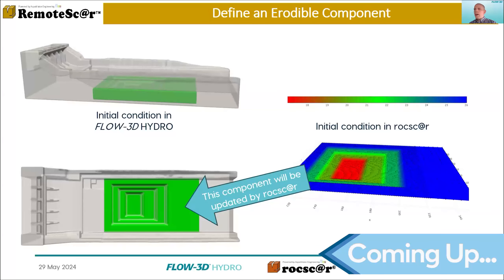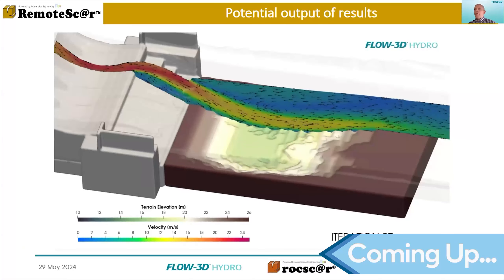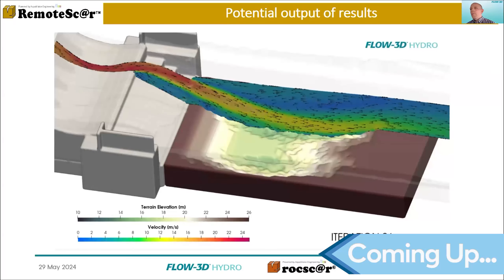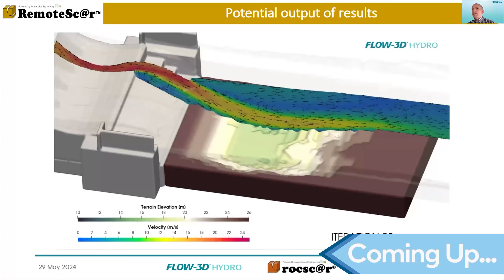So in RockScour, we're also defining that extent. These are the objects that will be updated throughout the coupling process. And so with the outputs that you can get, I pieced this together in Flow3D post. If you've used Flow3D before, the output you get is still just a normal Flow3D output file. The difference is that the bed is going to be different with each iteration, so you can see how the scour evolves.